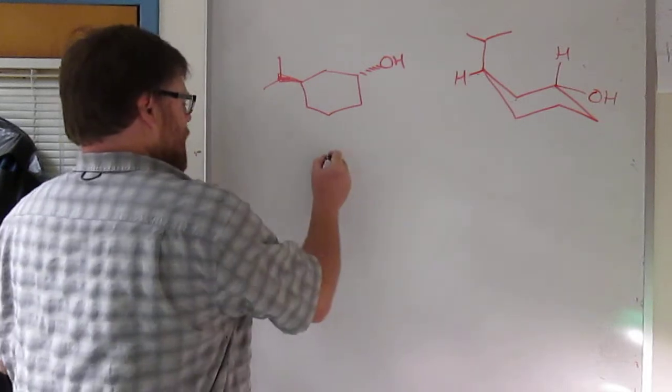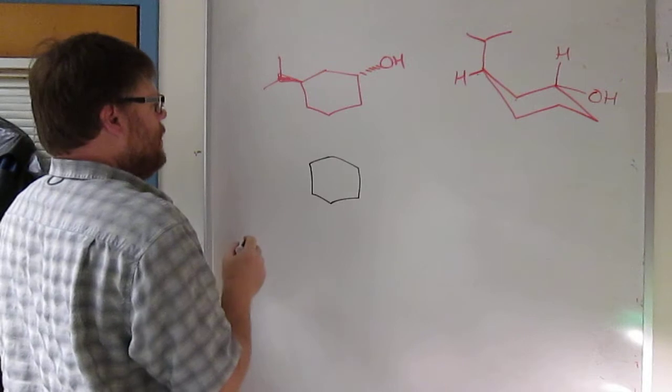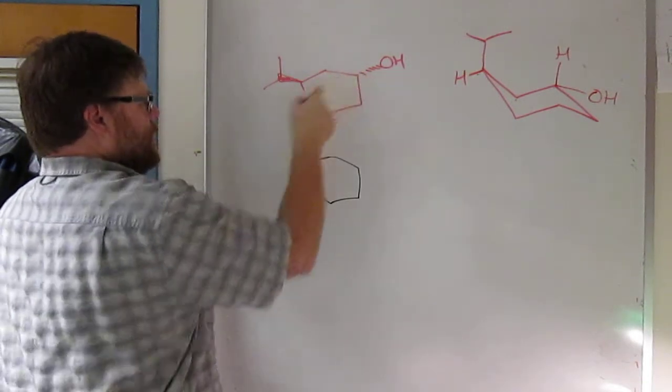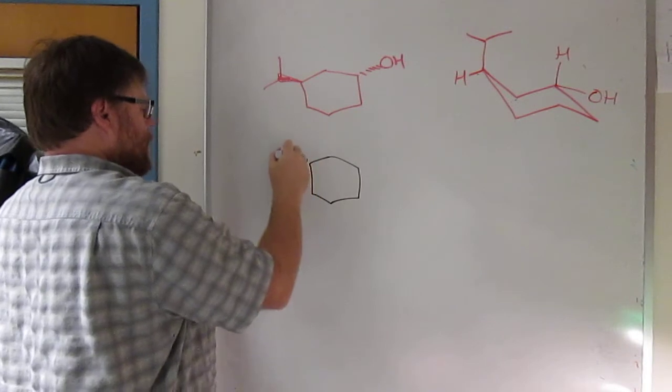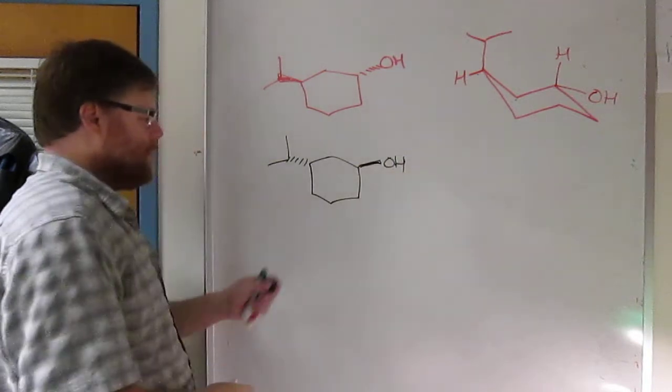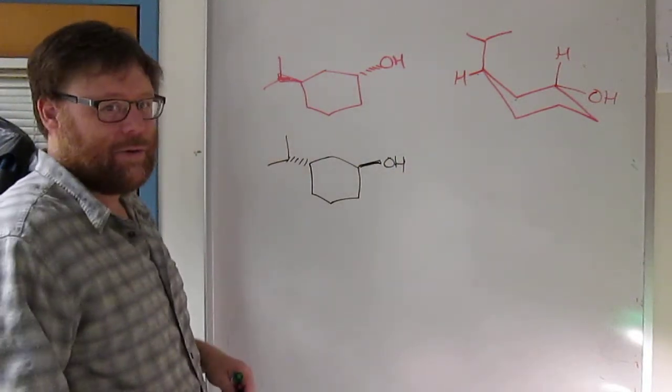This molecule is chiral. It's non-superimposable with its mirror image. Go ahead and draw its mirror image. The other way to draw an enantiomer is to just switch both - you can either draw the mirror image or you can just switch the configuration of both carbons. So the black cyclohexane is now the enantiomer of the red cyclohexane that I drew originally.